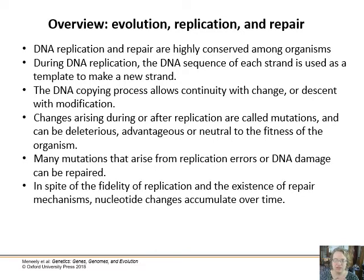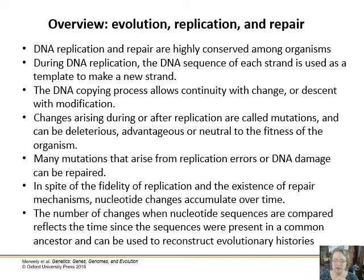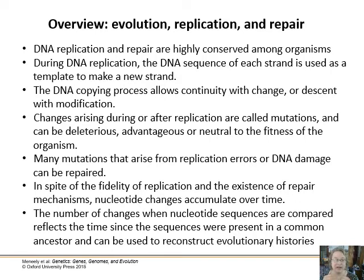Many mutations that arise from errors or DNA damage can be repaired — there are systems for that. But in spite of replication fidelity and these repair mechanisms, nucleotide changes accumulate over time in the DNA of the organism. The number of changes in the nucleotide sequence can reflect the time since sequences diverged, allowing you to reconstruct the evolutionary lineage of organisms by looking at changes that have accumulated over time in DNA sequences.